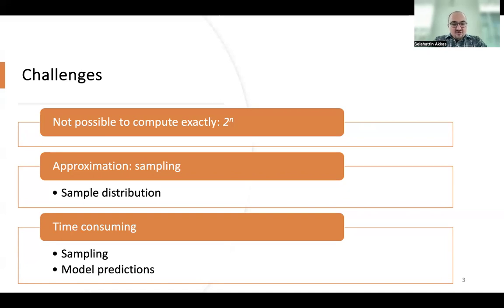However, distributing the total number of samples to coalition sizes affects the accuracy of Shapley values. Existing Shapley-based GNN explanations lead to suboptimal approximations.